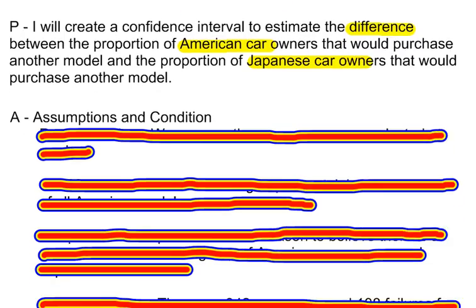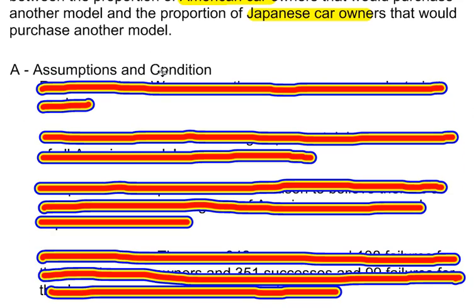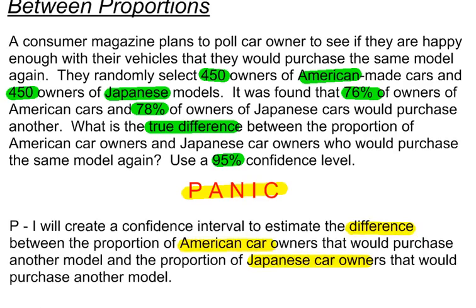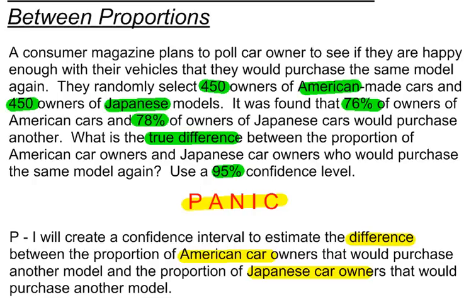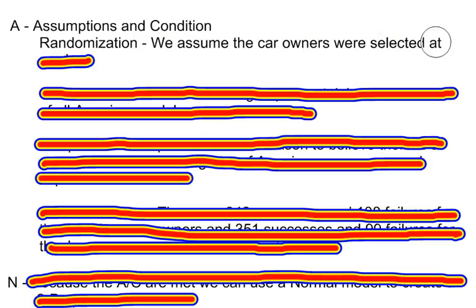The next thing I need to do is go through my assumptions and conditions — that's A. The assumptions and conditions for inference when dealing with the difference between two proportions are as follows. The first one is randomization. We randomize our samples so that our sample represents the population. So we assume the car owners were selected at random. It doesn't tell us that they are, but we're going to assume it.